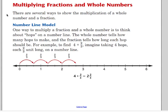We're going to start working with multiplying fractions. Now, sometimes you'll have to multiply a fraction times a whole number. So we're going to look at some strategies for doing that. There are several ways to show the multiplication of a whole number and a fraction. Here's the number line model. One way to multiply a fraction and a whole number is to think about hops on a number line. The whole number tells how many hops to make and the fraction tells how long each hop should be. For example, to find four times two thirds, imagine taking four hops each two thirds of a unit long on a number line. Where do you end up? Right here, two and two thirds.